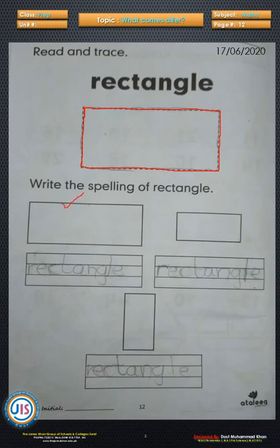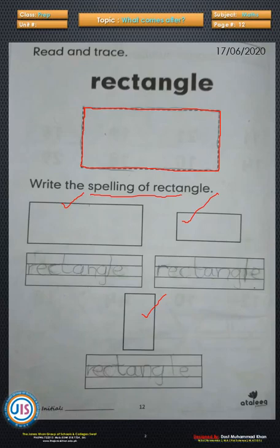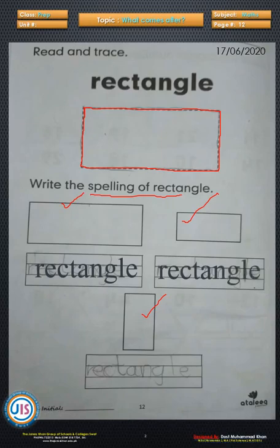Aur is mein sirf 2-2 barabar hote hain, so this was a rectangle. This is also a rectangle, this is also a rectangle — four rectangles are given, we have traced them. Now write the spelling of rectangle. In yesterday's video, the spelling of rectangle was taught: R-E-C-T-A-N-G-L-E. In the same way, you have to memorize and write it here.